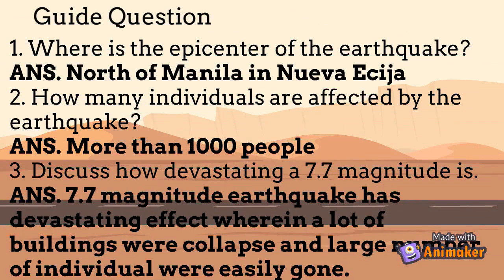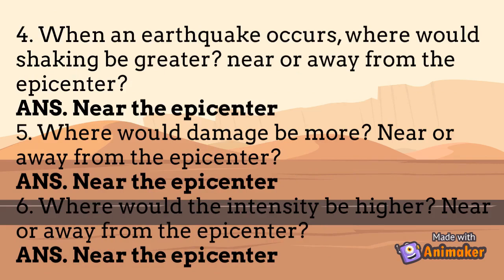Let's answer the guide questions. Number 1: Where is the epicenter of the earthquake? Answer: North of Manila in Nueva Ecija. Number 2: How many individuals were affected by the earthquake? Answer: More than 1,000 people. Number 3: Discuss how devastating a 7.7 magnitude is. Answer: A 7.7 magnitude earthquake has devastating effects wherein many buildings collapsed and a large number of individuals were killed. Number 4: When an earthquake occurs, where would shaking be greater — near or away from the epicenter? Answer: Near the epicenter. Number 5: Where would damage be more — near or away from the epicenter? Answer: Near the epicenter.